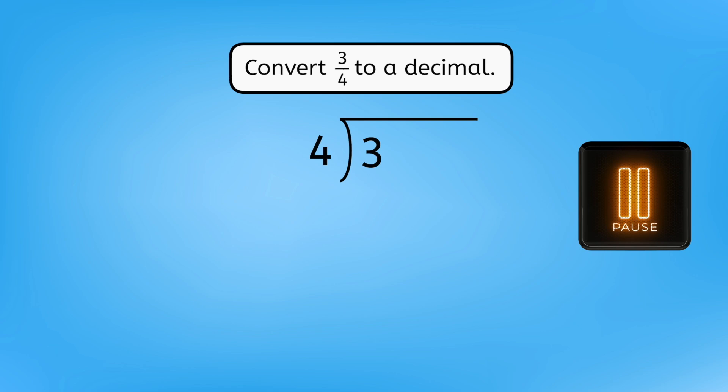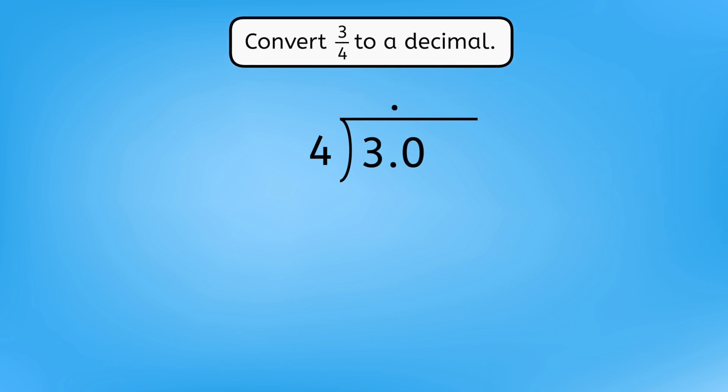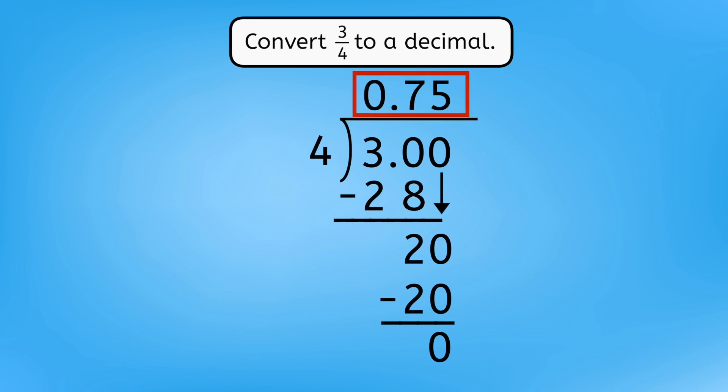Pause here to convert three fourths to a decimal in your guided notes. After adding our decimal and a placeholder zero, four goes into 30 seven times. Bring down another placeholder zero, and four goes into 20 five times, so three fourths is equivalent to the decimal 75 hundredths. But how does this help us convert to percentages?